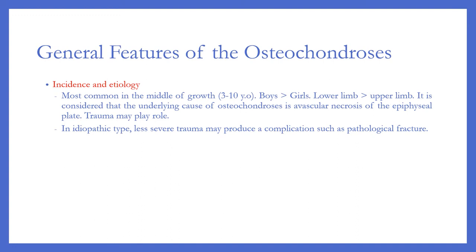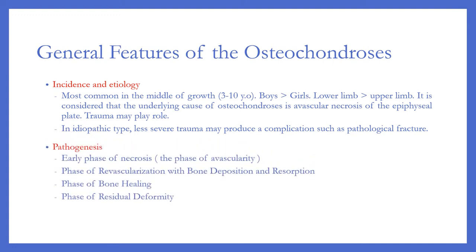In the idiopathic type, minor trauma may produce complications such as pathological fracture. Pathogenesis involves the following phases: early phase of necrosis, phase of avascularization, phase of revascularization with bone deposition and resorption, phase of bone healing, and phase of residual deformity.